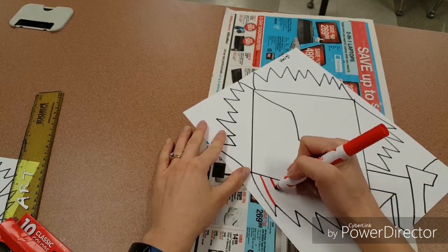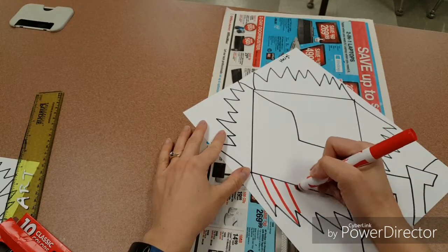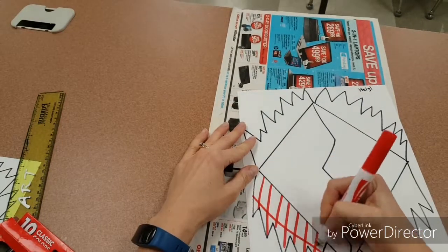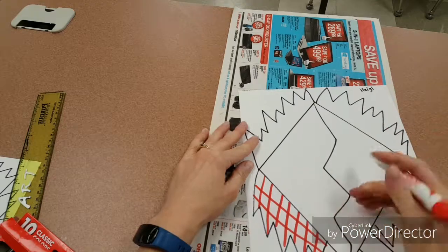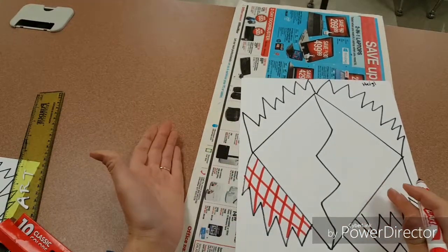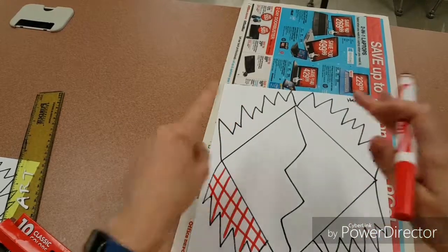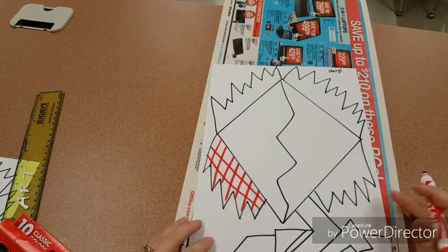You could always take a marker and make the hair a checkerboard, and you could leave it like that or color in the boxes. And they don't have to match either—they could be different in every single section.